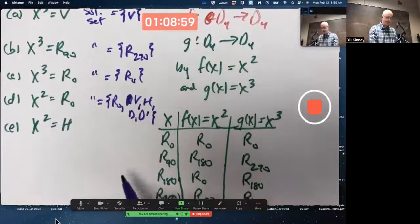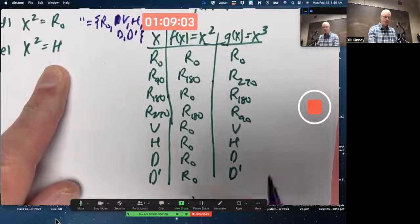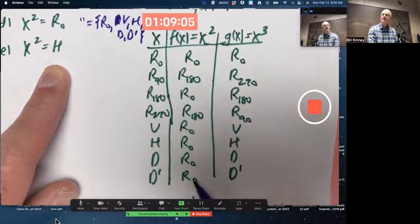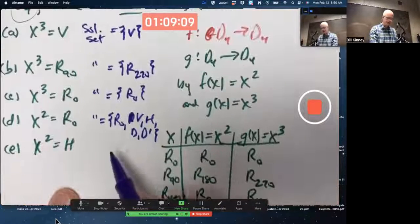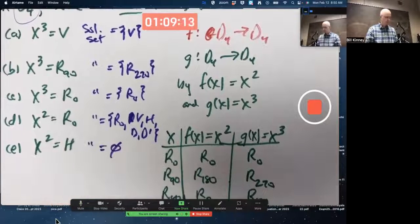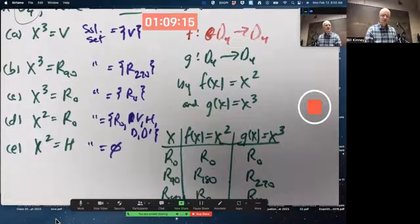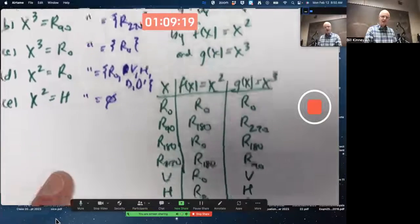And finally, the solution of that one, anything whose square is H? No, nothing in the square column is an H. So this is the empty set. Oops. Did I make a mistake? Question? Oh, I missed it. Yeah, R180. Thank you.